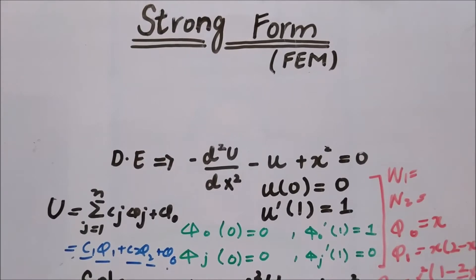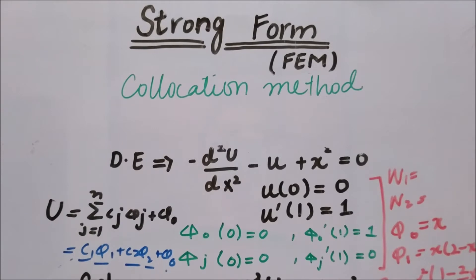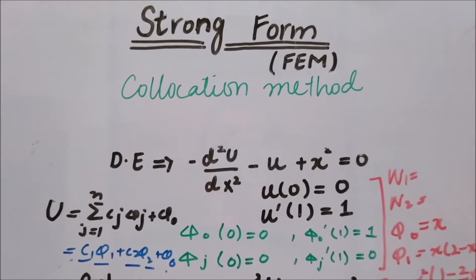In this method, as we have discussed in previous videos, the main assumption or purpose is to fix some points in the domain, and at that point we have to eliminate the residual or put the value of R at that point equal to zero.